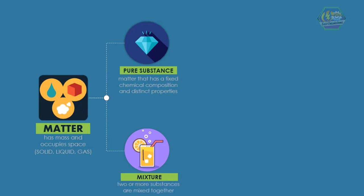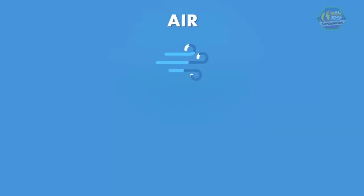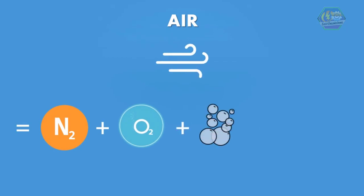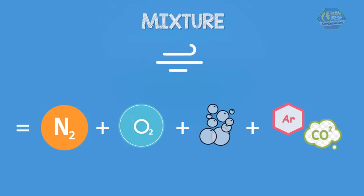For example, air. As we all know, air is composed of nitrogen, oxygen, water vapor, and other gases. Then we can say that air is an example of mixture, but its composition—which are the nitrogen, oxygen, and water vapor—are examples of pure substances.